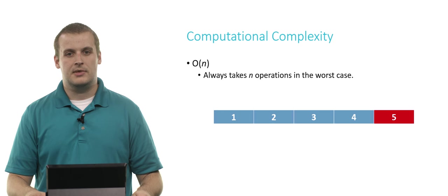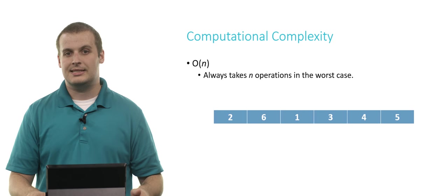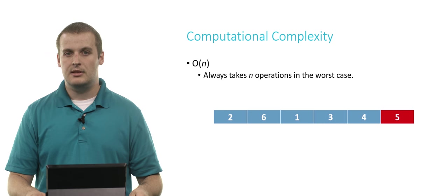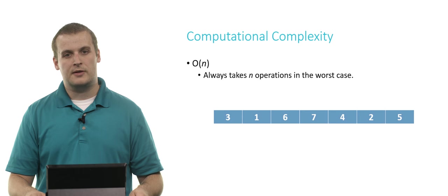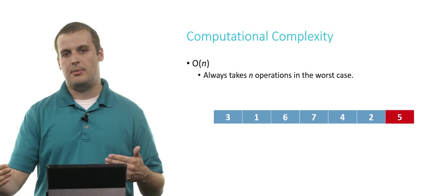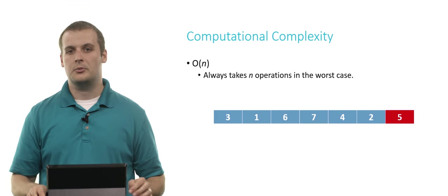We can confirm that by extrapolating a little bit by saying, if we had a six element array and we were looking for the number 5, it might take six steps. If we have a seven element array and we're looking for the number 5, it might take seven steps. As we add one more element to our array, it takes one more step. That's a linear algorithm in the worst case.